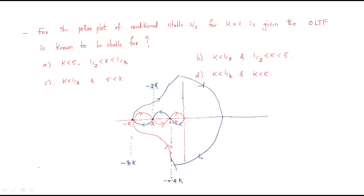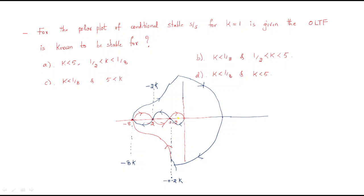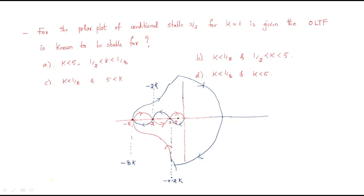k is inserted to find the k value, and we don't know where minus 1 plus j0 is located. For example, if minus 1 plus j0 is at a certain position, and the magnitude at that point is less than 0.2k, we consider Case 1. In Case 1, if minus 1 plus j0 is here, then the magnitude 0.2k is greater than 1.